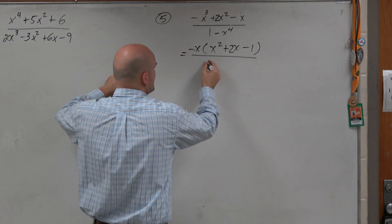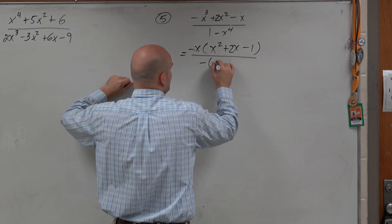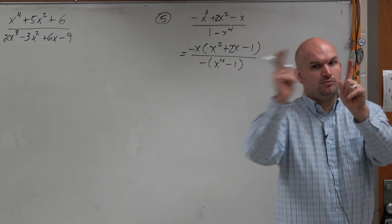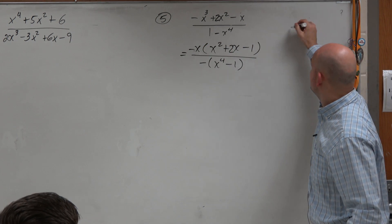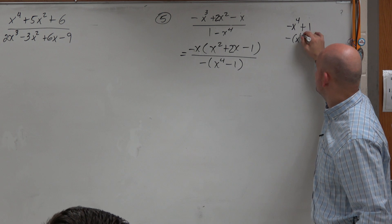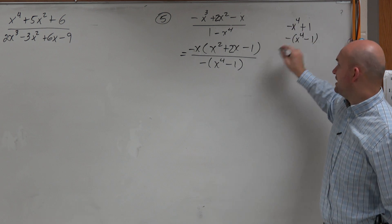But I want to have this in standard form. You should always want the power to be first. But again, I'm going to factor out that negative. So I'm left with an x to the 4 minus 1. Does everybody see what I did? I kind of swapped these. So it was negative x to the 4 plus 1, and then I factored out the negative.